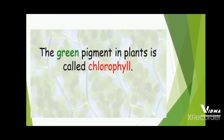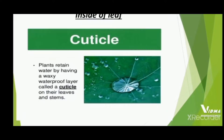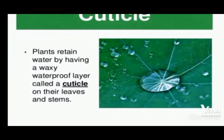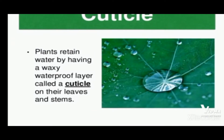What is a cuticle? Plants retain water by having a waxy waterproof layer called a cuticle on their leaves and stems. The plant saves its water by this cuticle — because of the cuticle, the water will remain inside the plant.